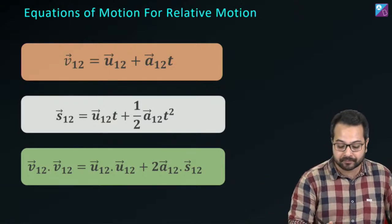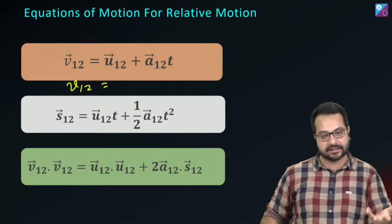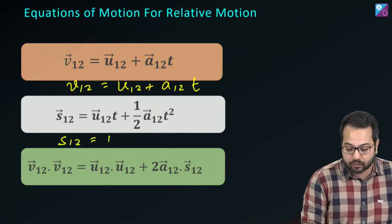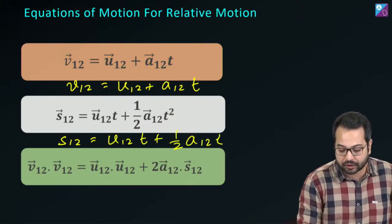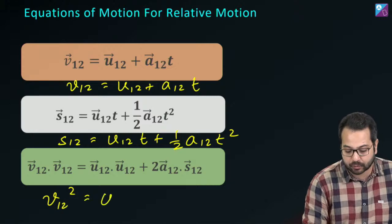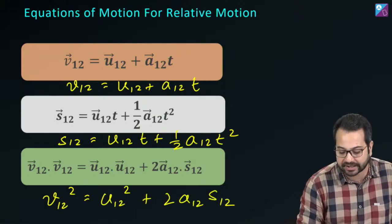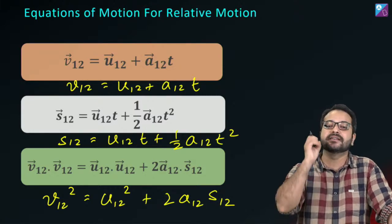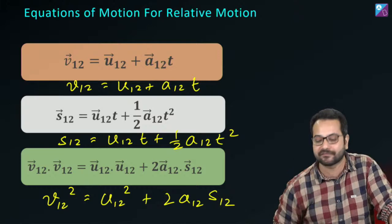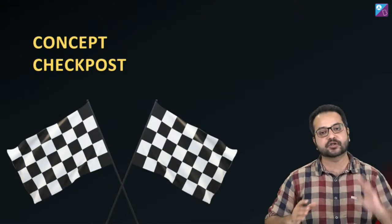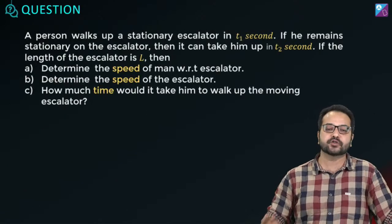In relative form, the equations of motion become: v₁₂ = u₁₂ + a₁₂·t; s₁₂ = u₁₂·t + ½·a₁₂·t²; and v₁₂² = u₁₂² + 2·a₁₂·s₁₂. All we have to do is substitute or replace the parameters with their relative counterparts. Now let's do a concept check with a question.